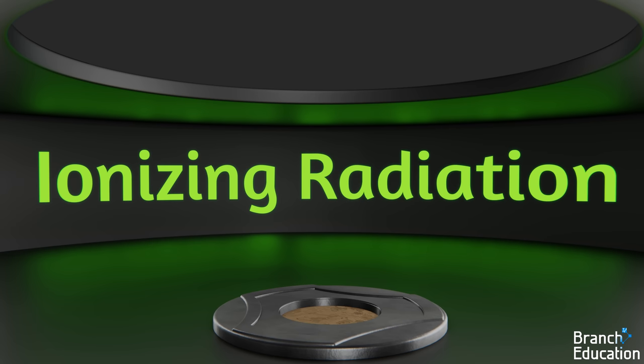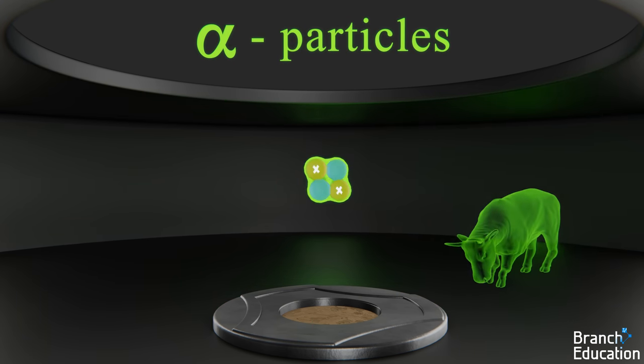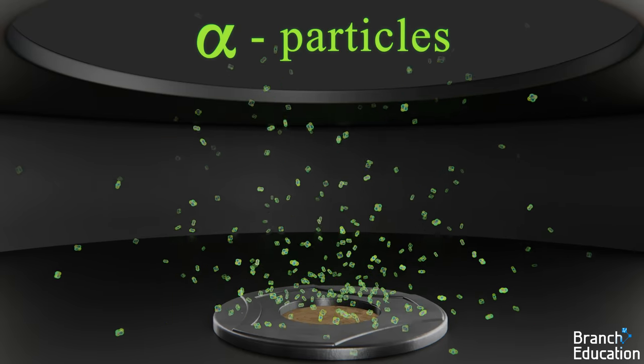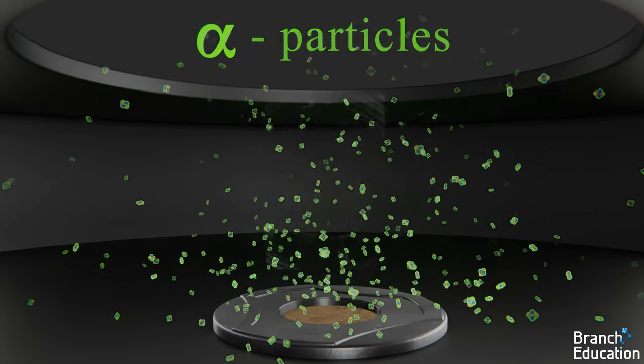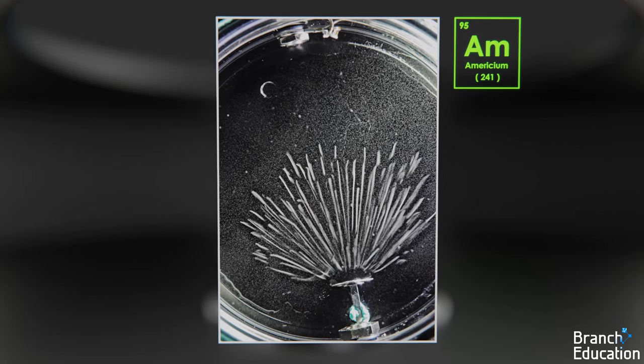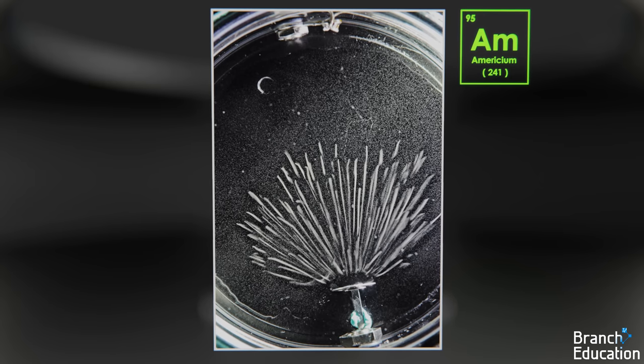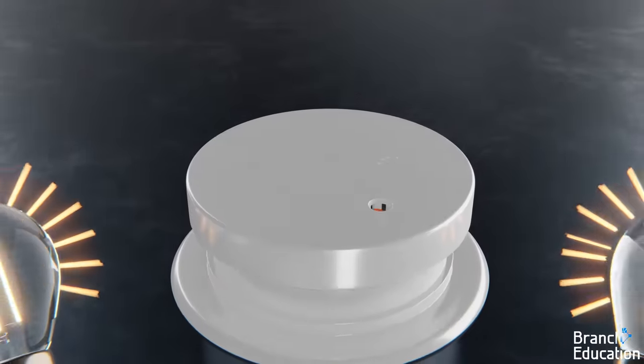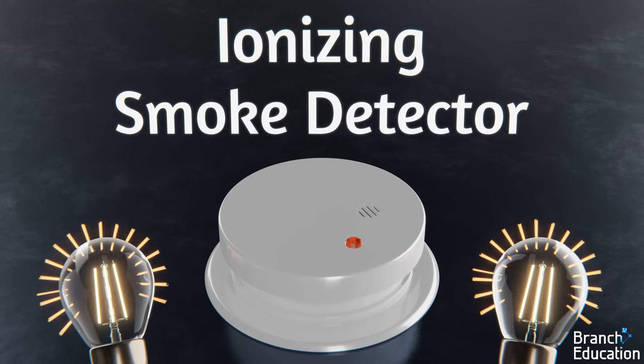A professor of mine once referred to an alpha particle as a bull in a pottery shop. Alpha particles run into everything, thereby creating atomic chaos. Here's a picture of a cloud chamber with americium-241, and in it you can see the paths created by individual alpha particles.